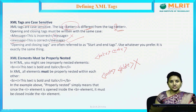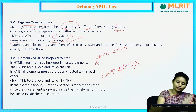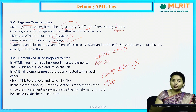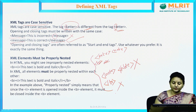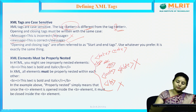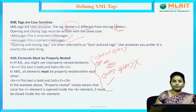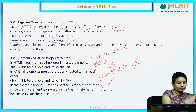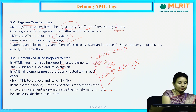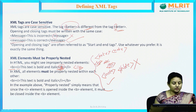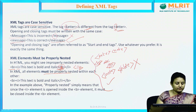XML elements must be properly nested. If you have nested tags a, b, c, you must close them in the correct reverse order. For example, if you open bold and then italic, you must close italic first, then bold — not the other way around. Closing bold before italic is improperly nested and is wrong. In XML, all elements must be properly nested within each other.